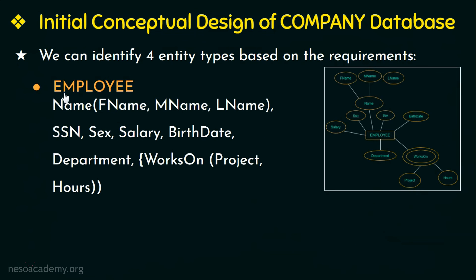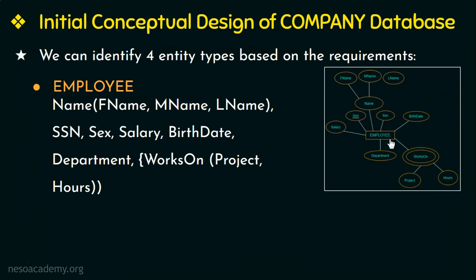The third entity type is employee, with attributes including employee name specifying first name, middle name, and last name; the SSN or social security number which is unique; sex or gender; salary details; date of birth; the department the employee works in; and the project an employee works on along with the hours spent. The social security number is unique and is therefore the key attribute for the employee entity type.